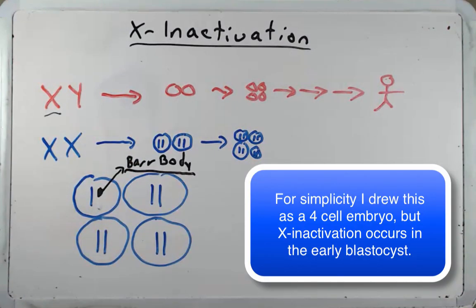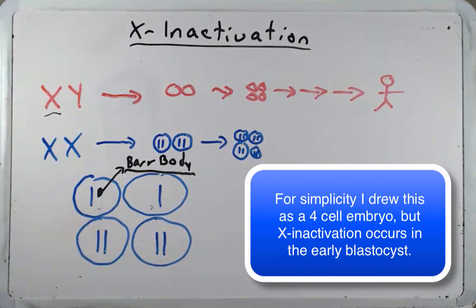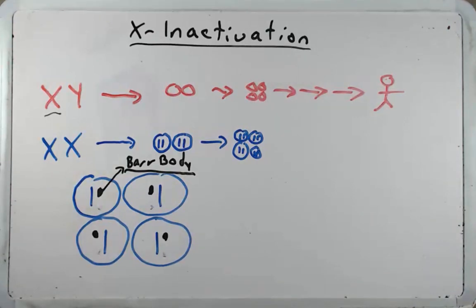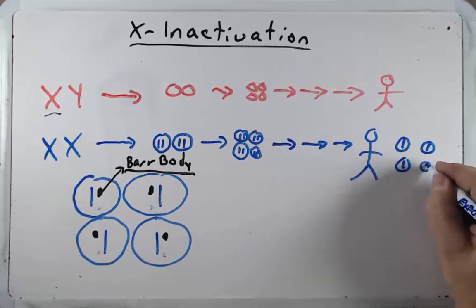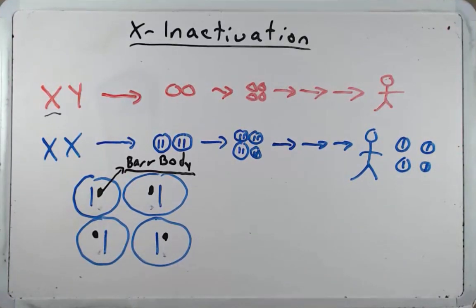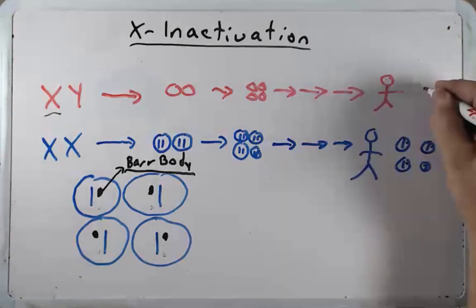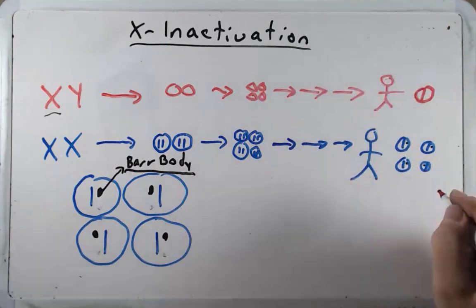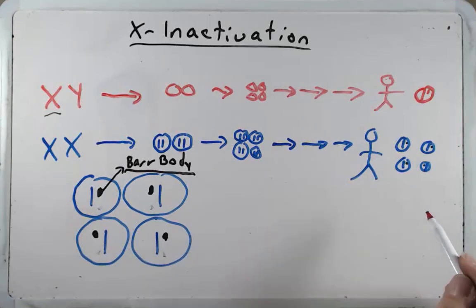As the female continues to develop, all of her cells will have only one X chromosome expressing proteins, because the Barr body doesn't express proteins — it's been silenced. The Barr body is still present in the cell but produces nothing. In this way, males and females each express only one X chromosome per cell: males because they only have one X, females because one X is inactivated as a Barr body.